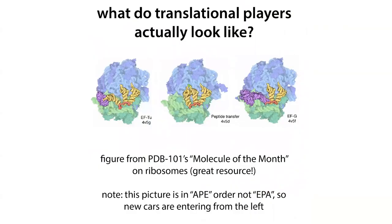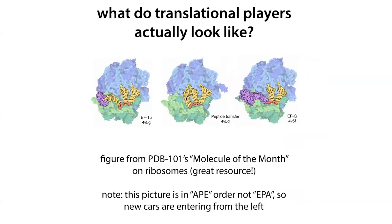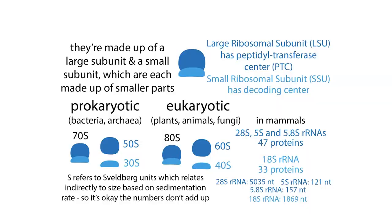Let's look at ribosomes in more detail. The ribosome has a large subunit (LSU) and a small subunit (SSU). The large subunit contains the peptidyl transferase center (PTC), where the actual transfer of the nascent chain — from the growing chain in the P site to the incoming aminoacyl tRNA in the A site — takes place. The small subunit contains the decoding center, where the check occurs: does the codon match the anticodon? Both subunits together form a functional ribosome.